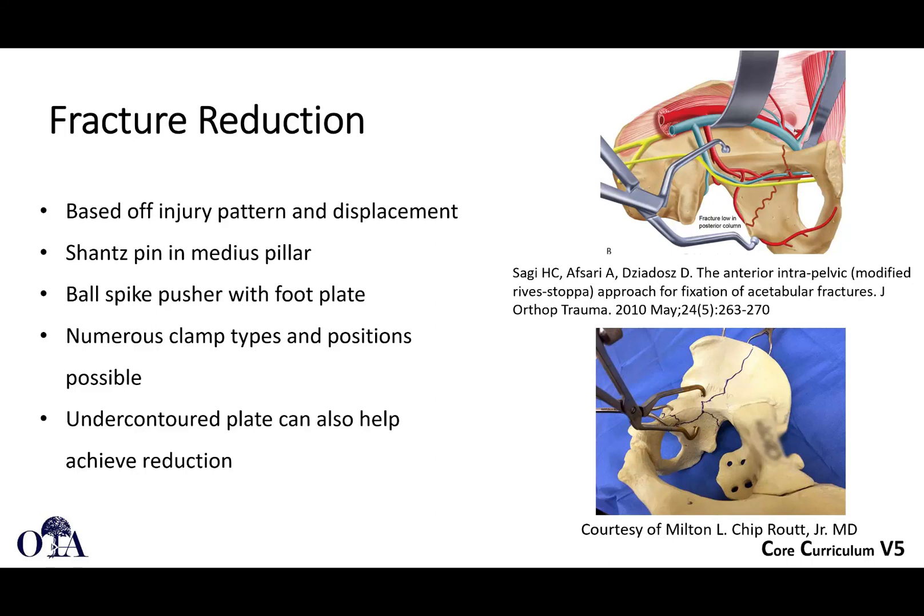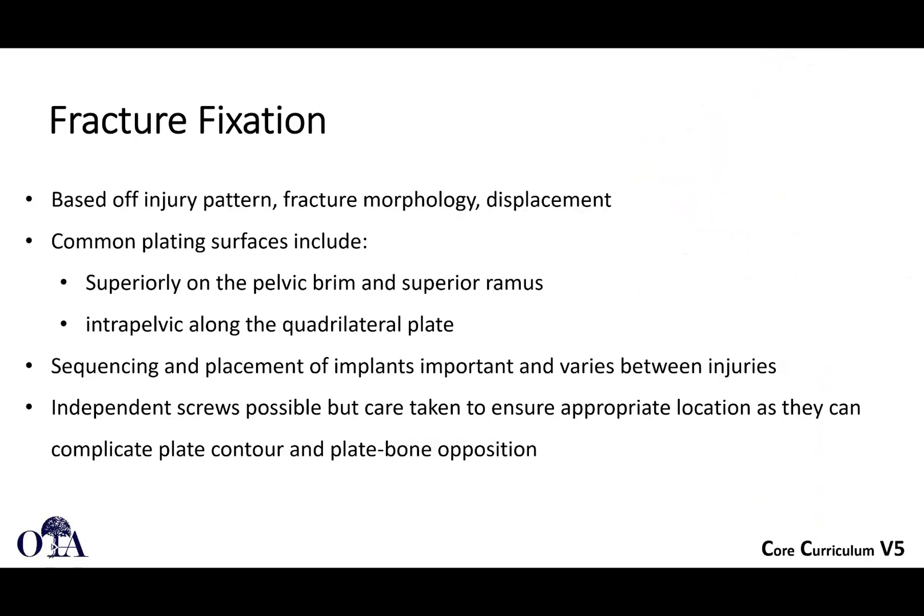Fracture reduction is going to be based off the injury pattern and displacement. Depending on where your fracture lines are, you can use a Schanz pin in the gluteus medius pillar, ball spike pusher-type devices with foot plates, and different types of clamps in various positions. Sometimes you may need to use an under-contoured plate to do a plate-assisted reduction, fixing the plate on one side and using a clamp on the other to pull the reduction into place.